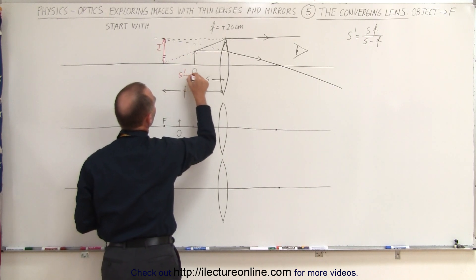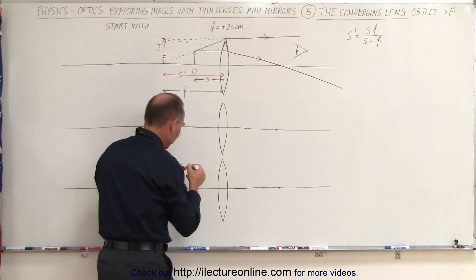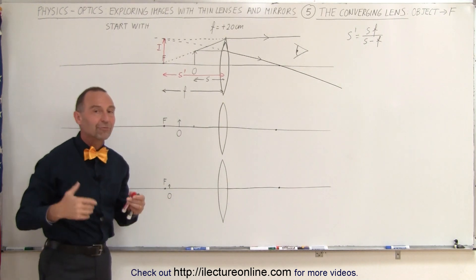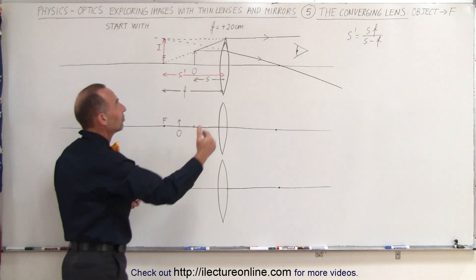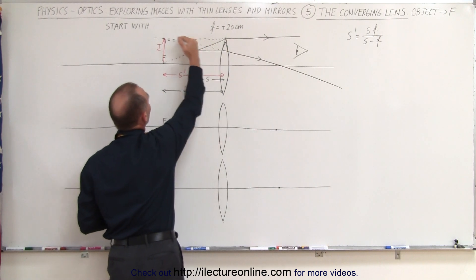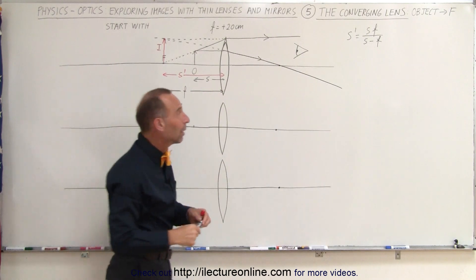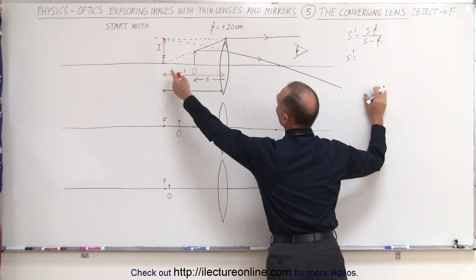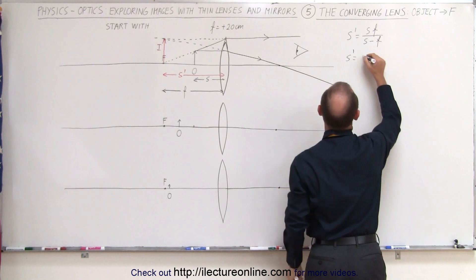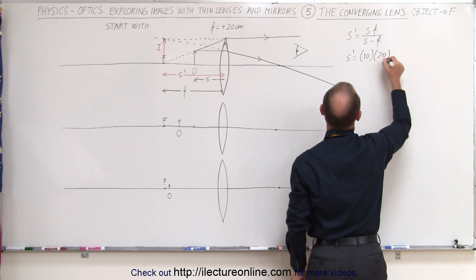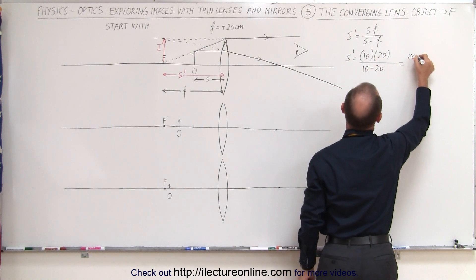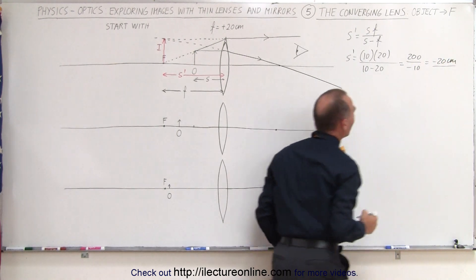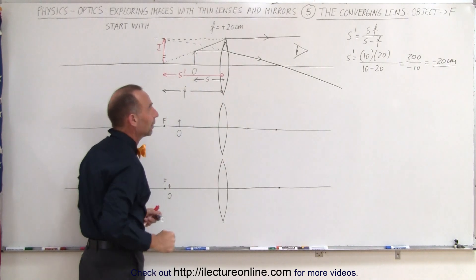The distance S' is the distance from the lens to the image. Since the image is on the same side as the object, that's also an indication that it's a virtual image, not a real image. Notice the rays really do not come together there — they just appear to be coming together there by an observer on this side of the lens. To find the location, S' equals S times f over S minus f, where S is 10 centimeters (halfway between the lens and focal point), times 20 for the focal length, divided by 10 minus 20, which is 200 divided by minus 10, which is minus 20 centimeters. So when we calculate the number it puts the image right on top of the focal point on this side.